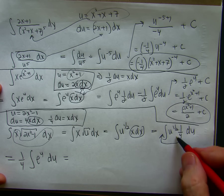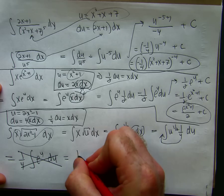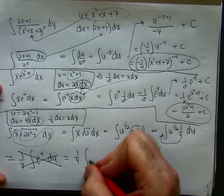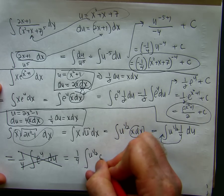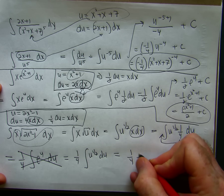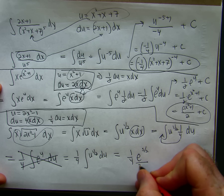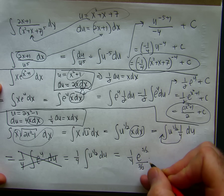Oops. How did I get that? Looking at the wrong problem. Again, let's do the problem I'm supposed to be doing. Take the 1 quarter out. So, u to the 1 half du. I'm sorry about that error. Integrate. 1 quarter. Add 1 to the exponent. Divide by the new exponent. Sorry, that's u.